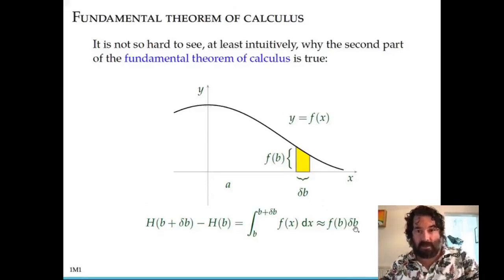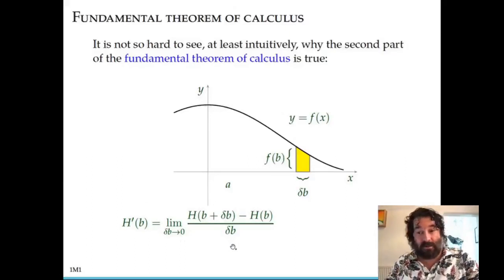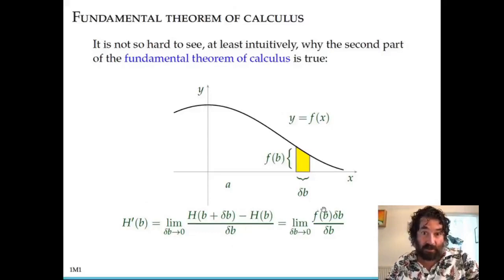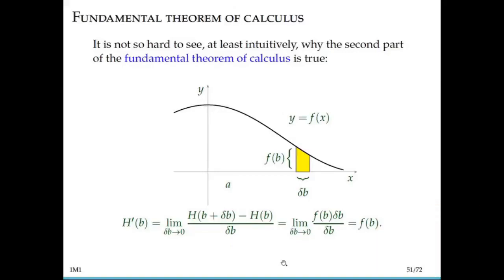This basic approximation is the reason why the fundamental theorem of calculus is true, at least the second part. We take the derivative of h at b by taking the limit as delta b goes to zero of the change in h divided by the change in b. The change in h is approximately f of b times delta b. The delta b's cancel out, and we get that this equals f of b. So the derivative of h equals the integrand evaluated at b — that is the second part of the fundamental theorem of calculus.